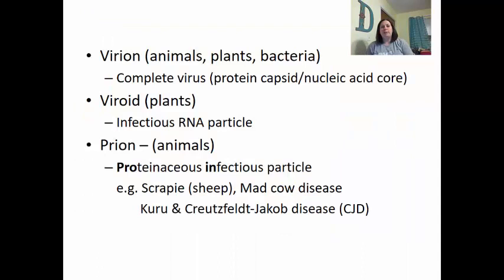Some other terms to know: virions are found with animals, plants, and bacteria — this is a complete virus consisting of the protein capsid with its nucleic acid core. Viroids are found in plants and are infectious RNA particles — not a complete virus, they lack a capsid and have very little nucleic acid, just some RNA. Prions are found within animals and are proteinaceous infectious particles.